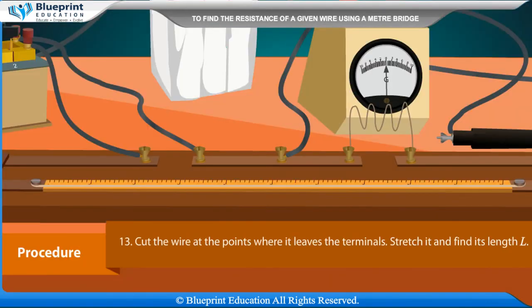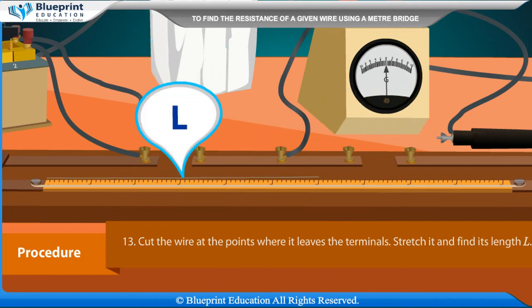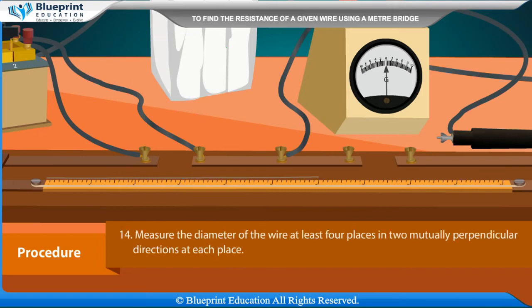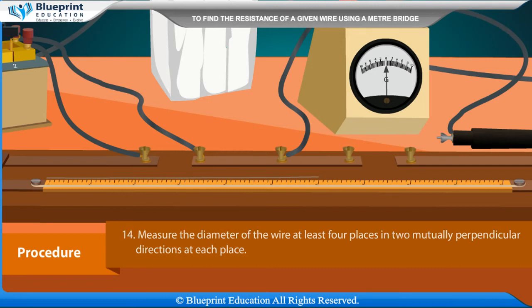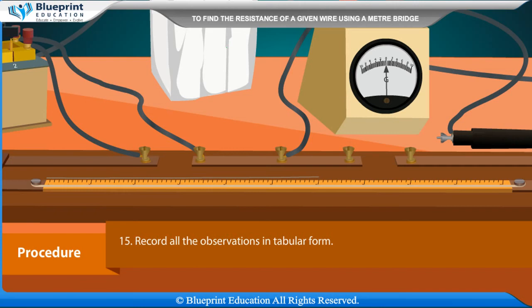Cut the wire at the points where it leaves the terminals. Stretch it and find its length L. Measure the diameter of the wire at least 4 places in 2 mutually perpendicular directions at each place. Record all the observations in tabular form.